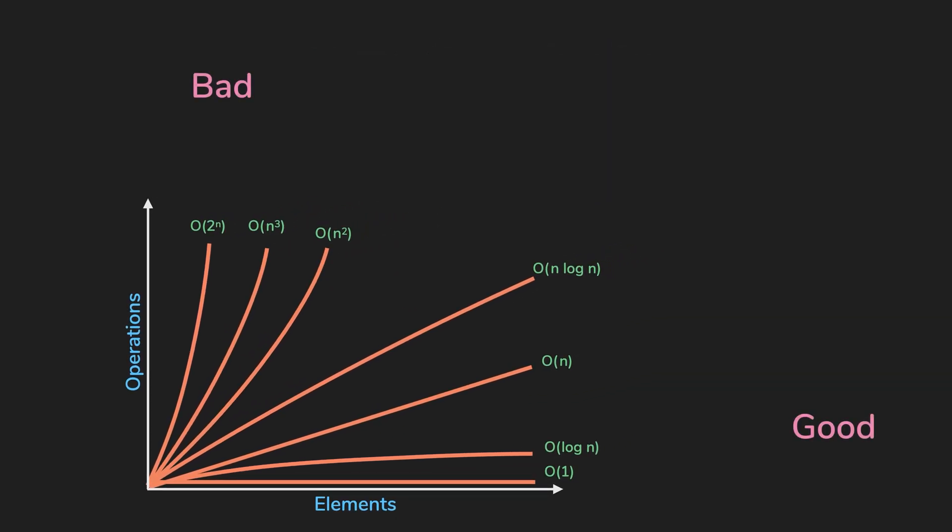If you see the six types of time complexities in this plot, it is pretty clear that in this order, the time complexity gets good to bad.